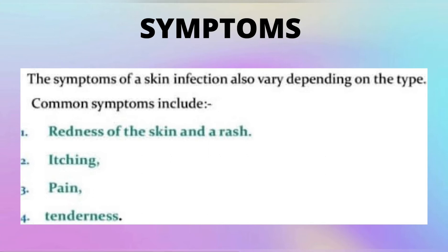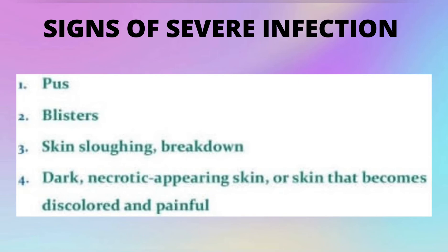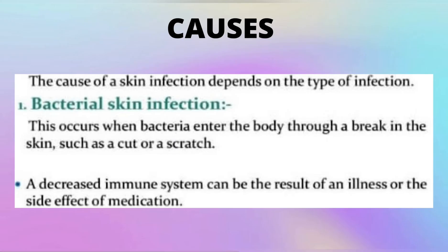After that, we will talk about symptoms. The symptoms of a skin infection also vary depending on the type. Common symptoms include redness of the skin, a rash, itching, pain, and tenderness. Signs of severe infection include pus, blisters, skin sloughing or breakdown, and dark necrotic-appearing skin or skin that becomes discolored and painful.